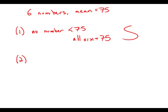Now ignore statement number one, move on to statement number two. Statement number two, almost identical information. Now it's telling us that no number on the list is greater than 75.